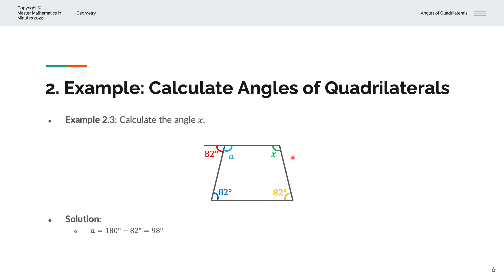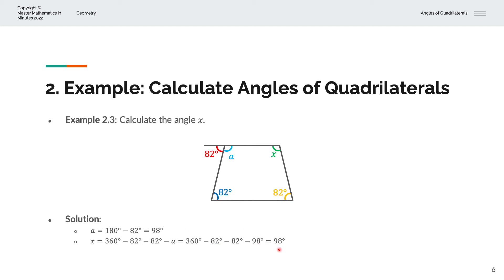We now have three of the interior angles in the trapezium, which allows us to solve for X. The sum of all interior angles is 360 degrees in a quadrilateral, or in this case, a trapezium. So X equals 360 degrees, minus 82 degrees, minus 82 degrees, and minus A — which is 98 degrees from above. That gives us X equal to 98 degrees.